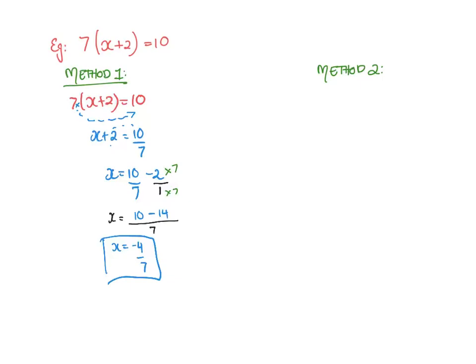Now if I did it the other way, where I might expand out the brackets. So we do 7 times x, 7x, 7 times 2. So plus 14 equals 10. And then we go about solving it. So I'll move the 14 over. It'll become minus. So I get 7x equals negative 4.